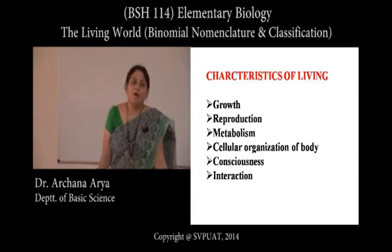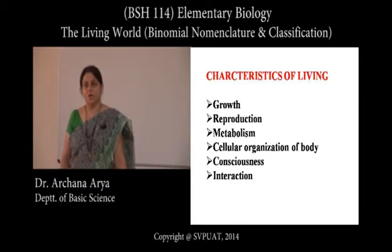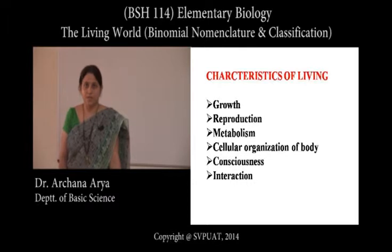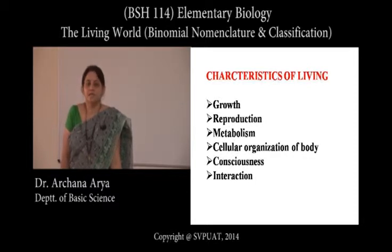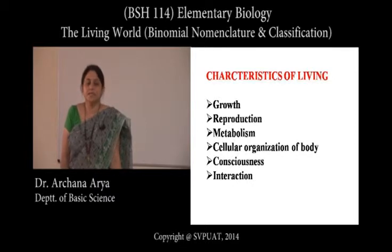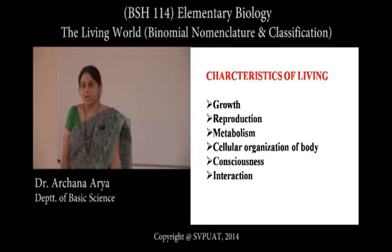Next, all living things reproduce — for the continuity of their race, for the continuity of their progeny. Another important characteristic of living things is they have an almost fixed lifespan. So these are certain characteristics of living things which make them different from non-living things. All these things are called living organisms and come under the living world.